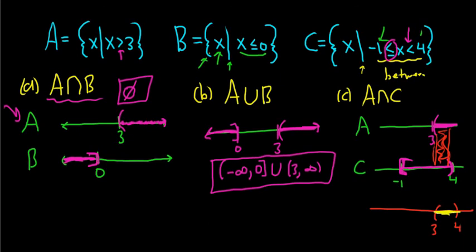So the answer to this question would be parentheses 3, 4. 3, 4. That would be the intersection. So I hope this video has been helpful to someone out there who's learning about unions and intersections. That's it.